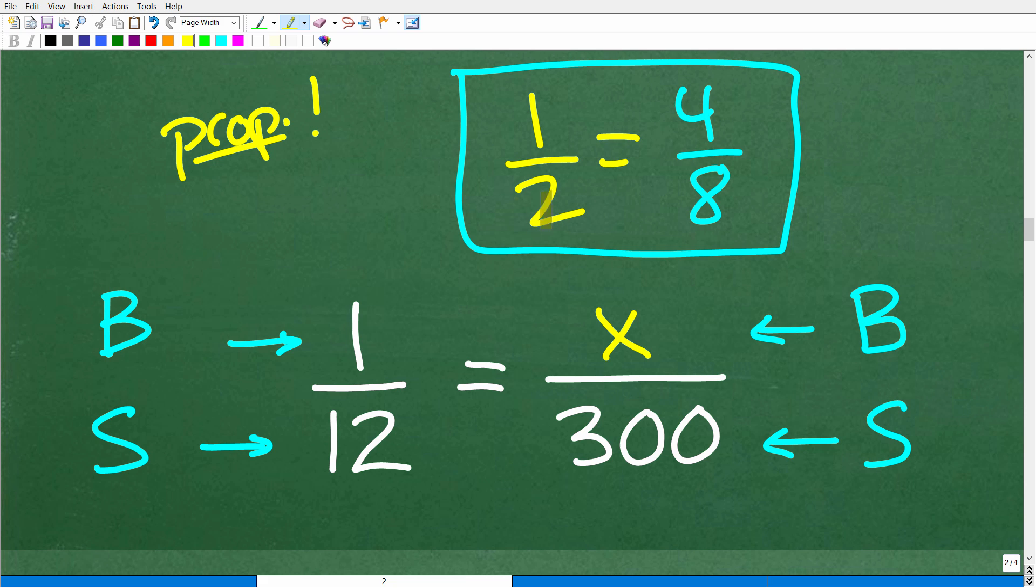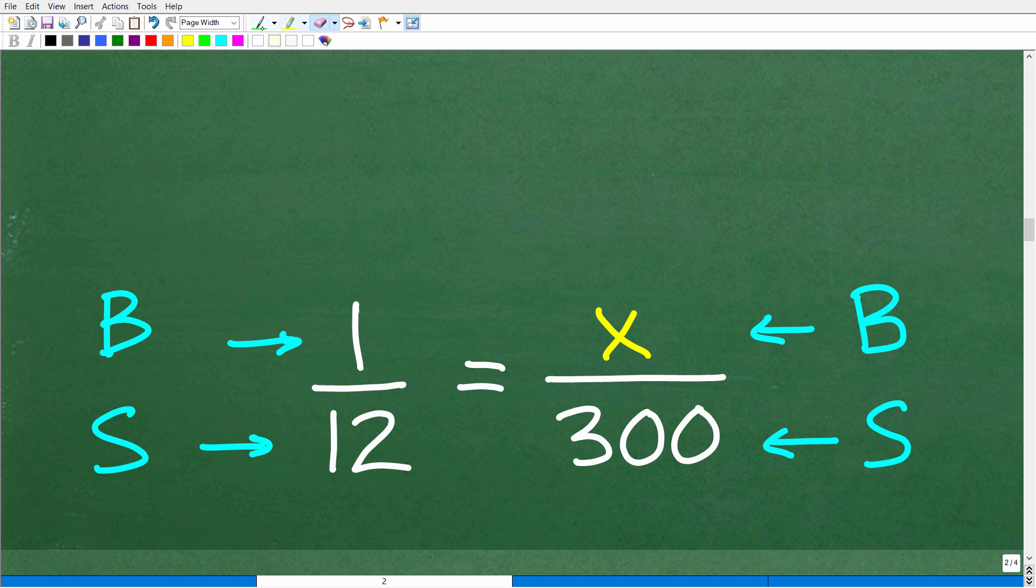Let me show you this. Two times four is eight. One times eight is also eight. So eight equals eight. If you remember that a proportion is two equal fractions and the cross products are equal, you can solve any proportion, rate, or ratio problem.